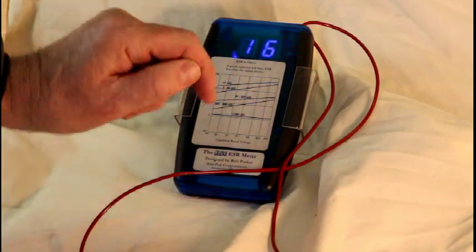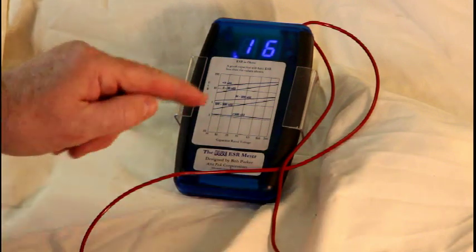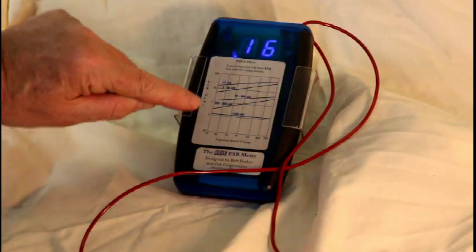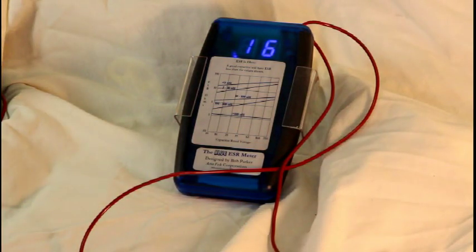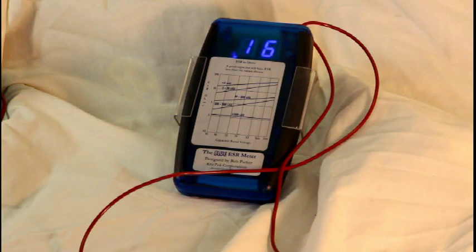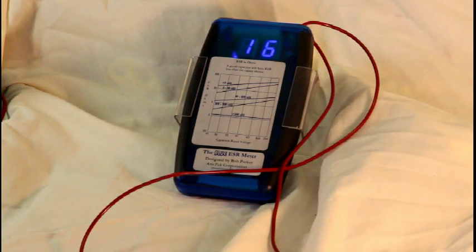The lines on the graph represent a range of capacitance values. The horizontal axis is the capacitor rated voltage. The vertical axis is ESR in ohms, indicating on the lines the maximum ESR that a good capacitor would have.